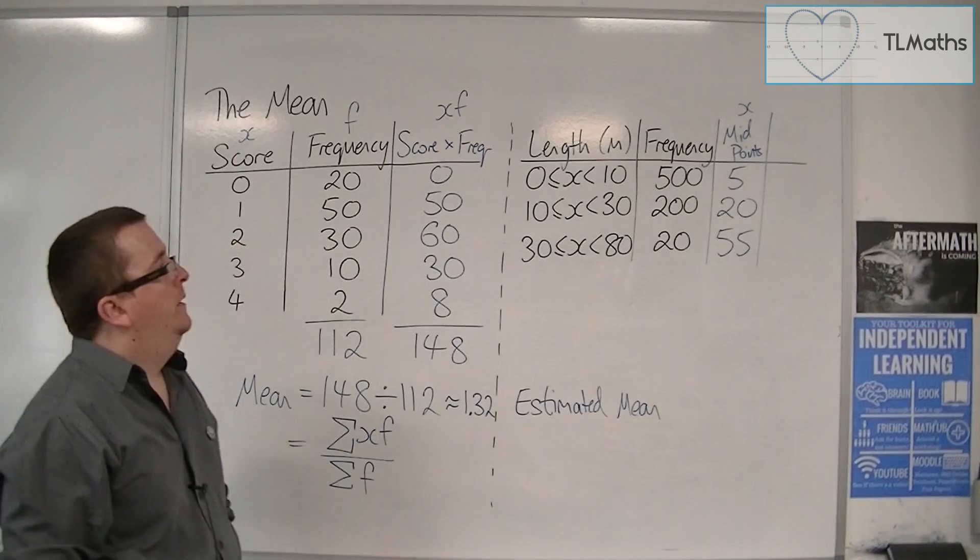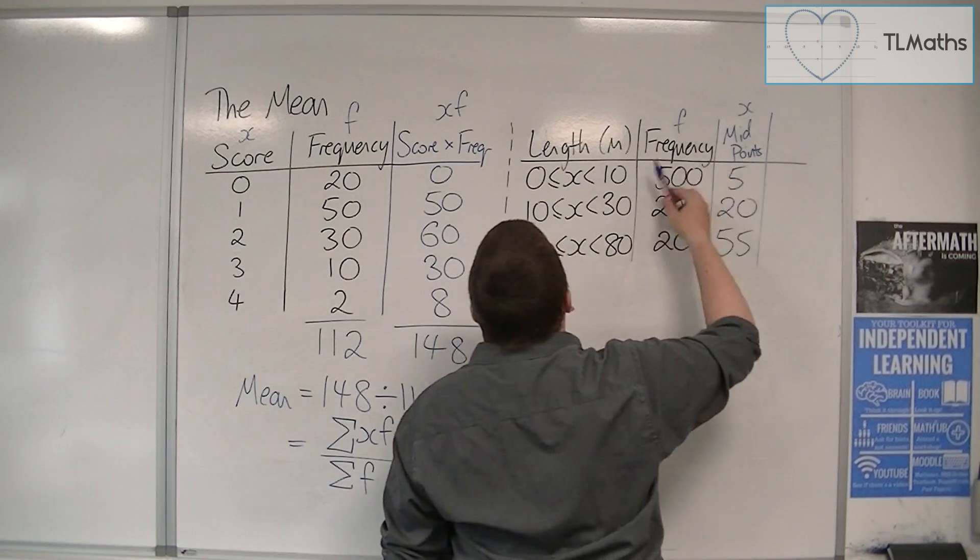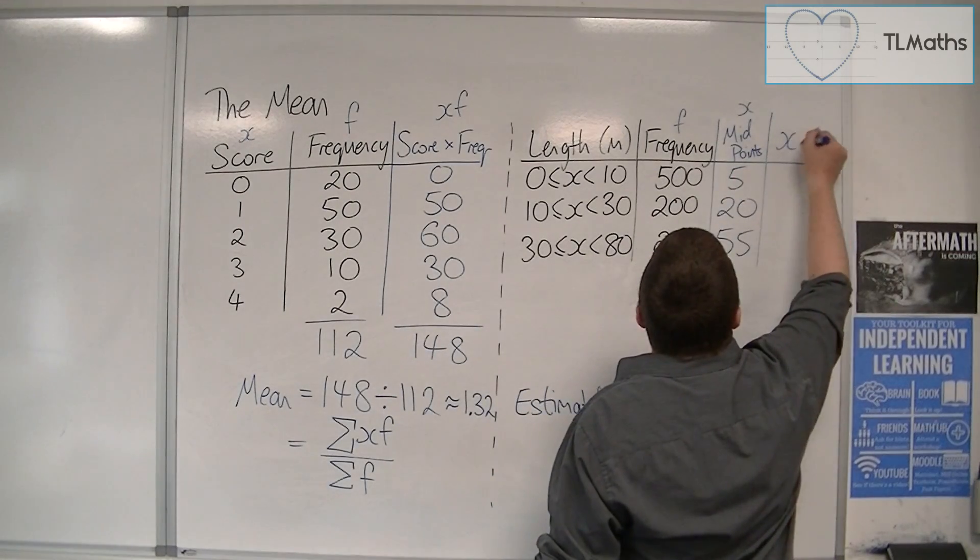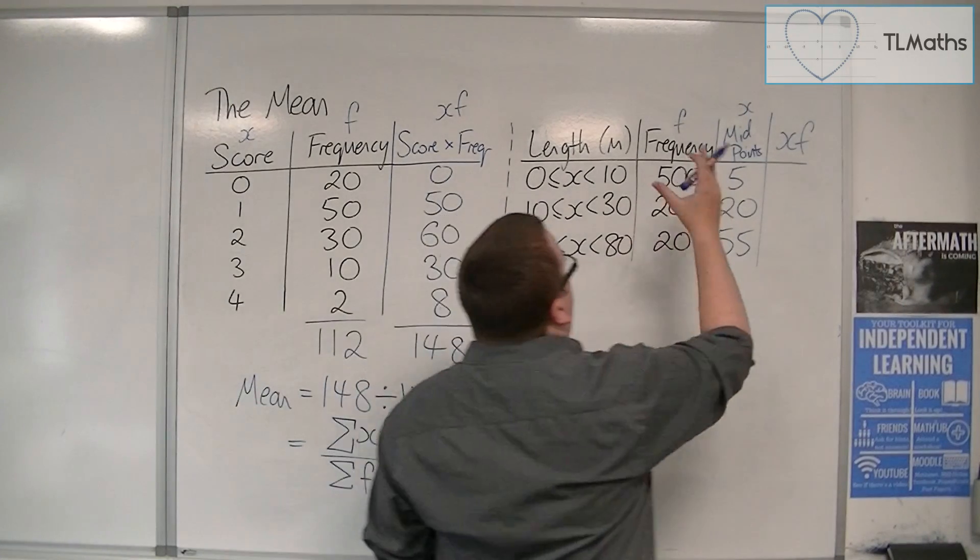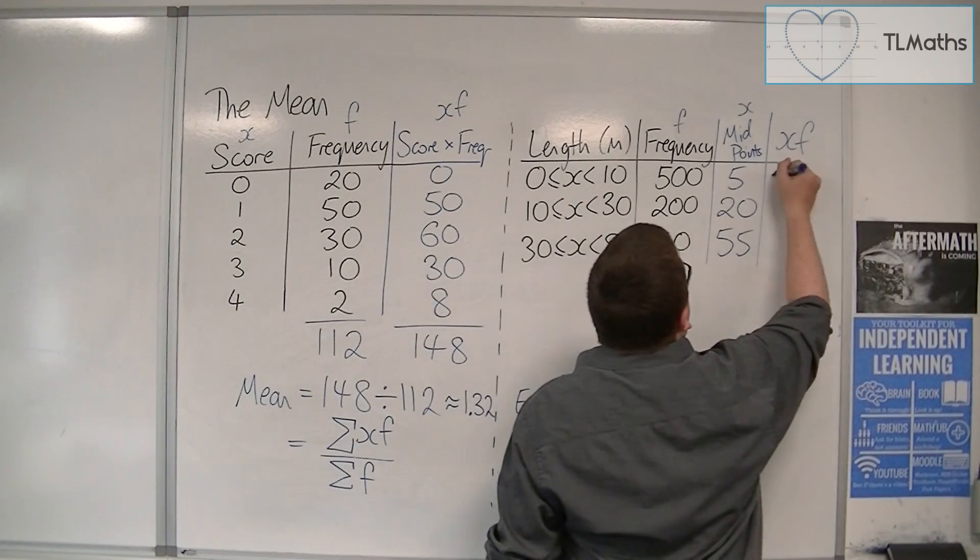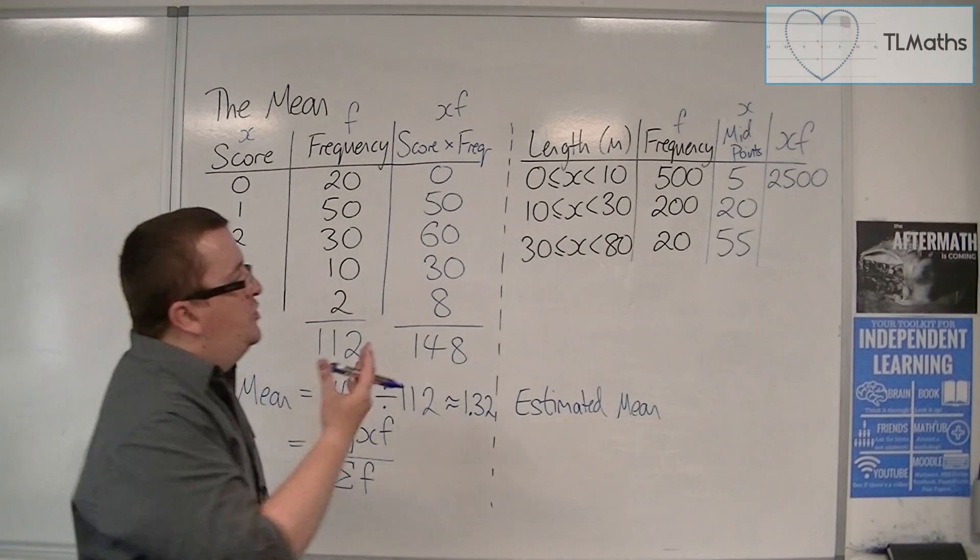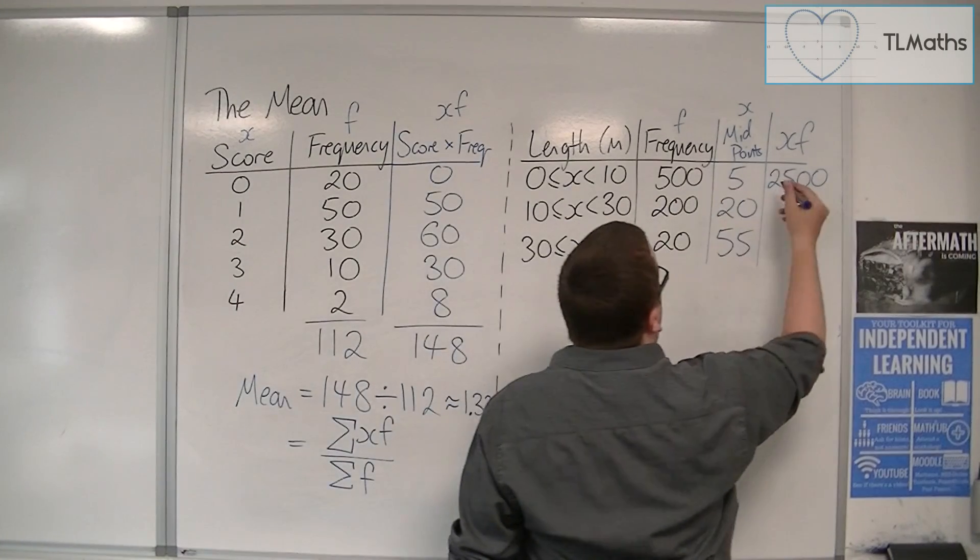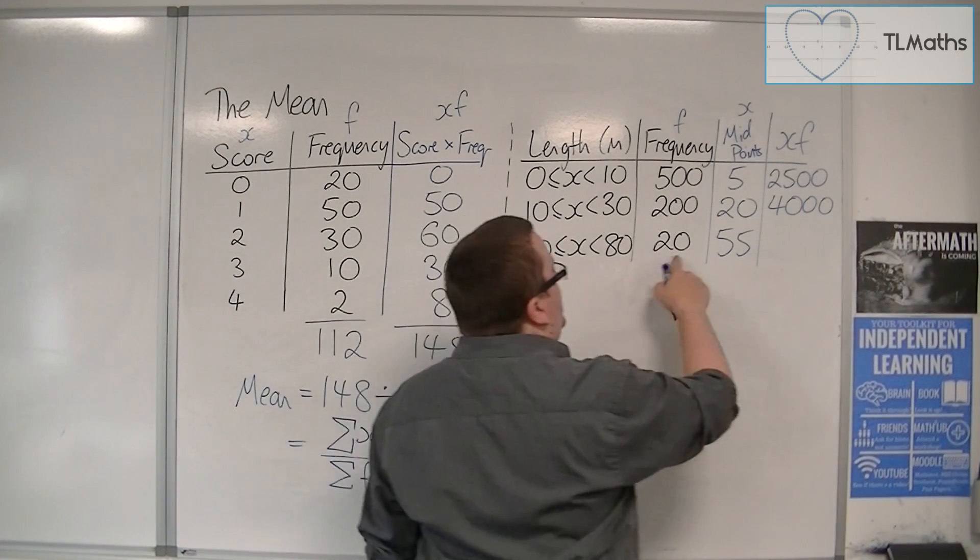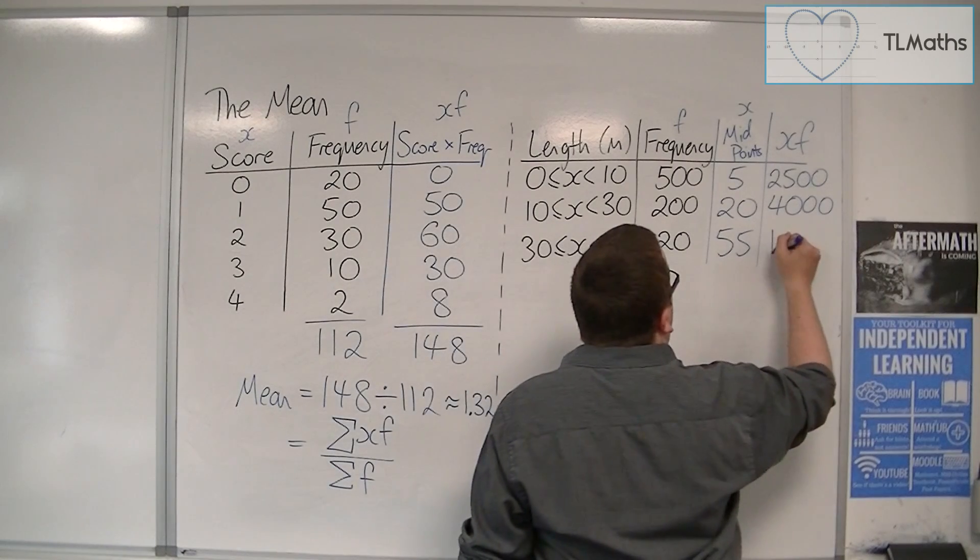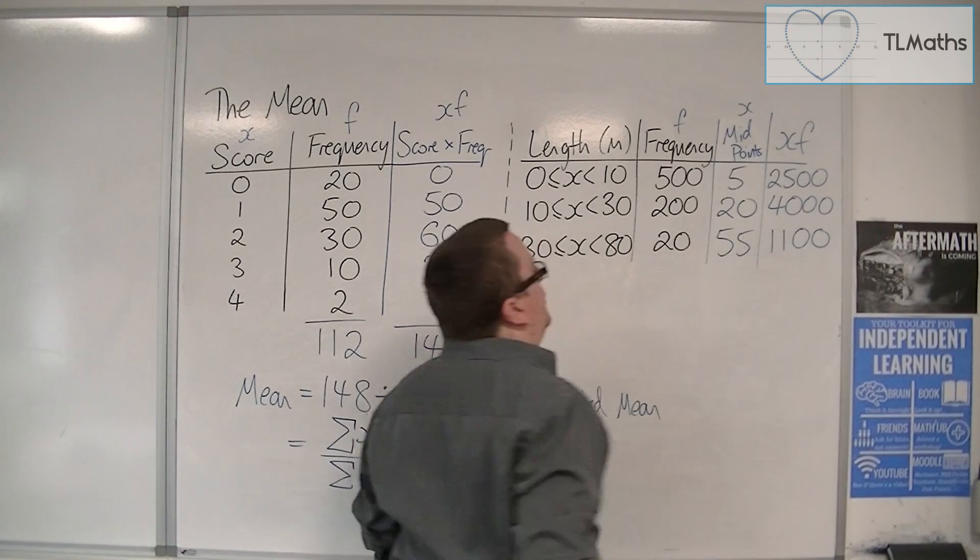So we can use this midpoints column as my x's. The frequencies are the f's. And so the next thing I need to do is multiply the x's by the f's, the midpoints times by the frequency. So we've got 5 times 500, so that's 2,500. 200 times 20, well that's going to be 4,000. Then 20 times 55, well that's going to be 1,100 for 2 times 55, then add on another 0. So 1,100.